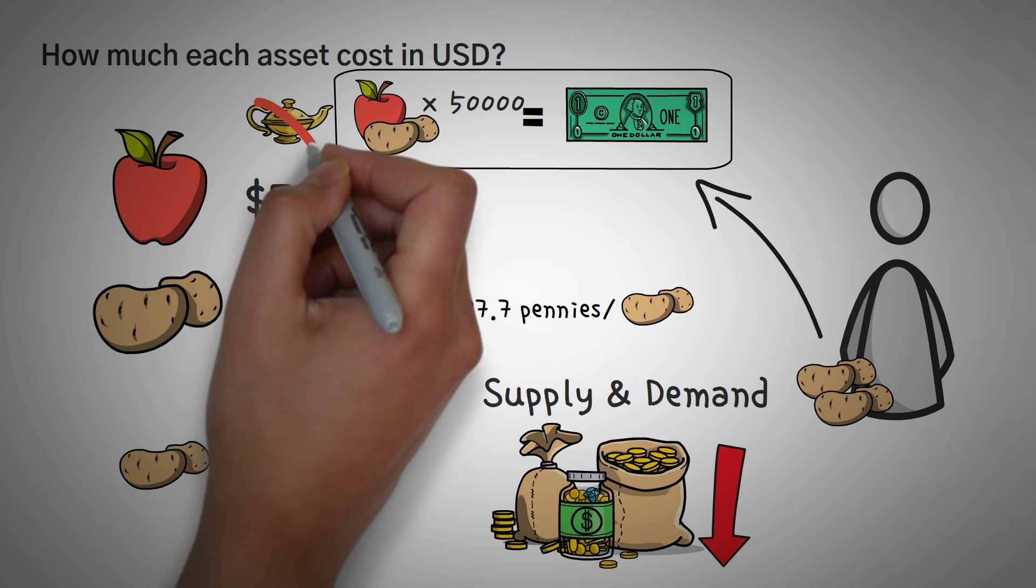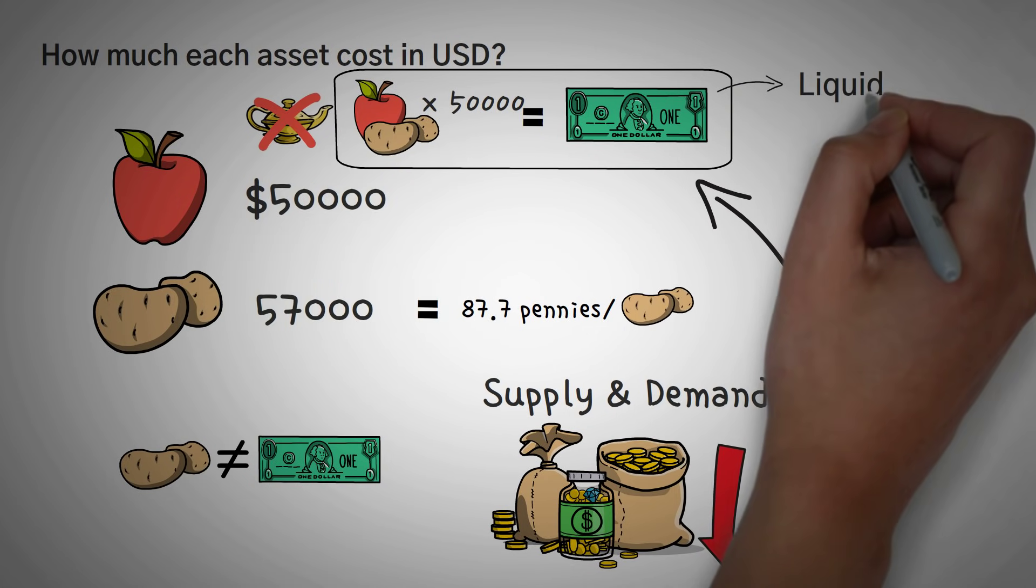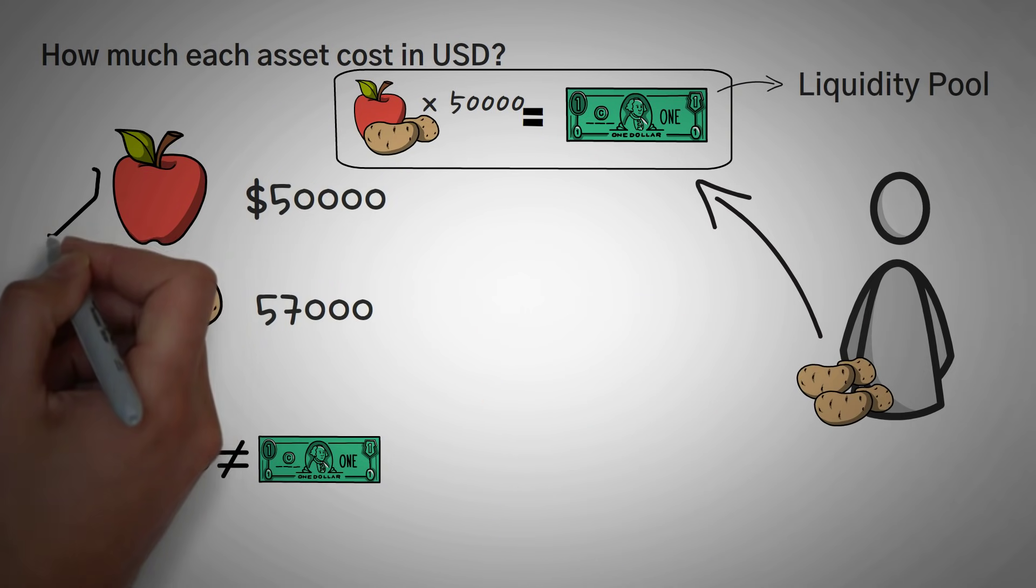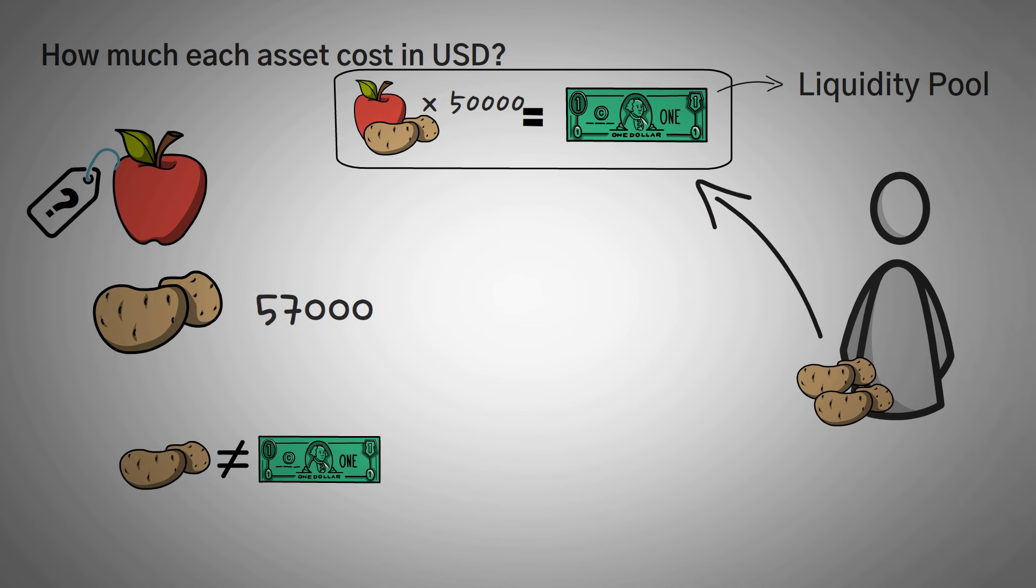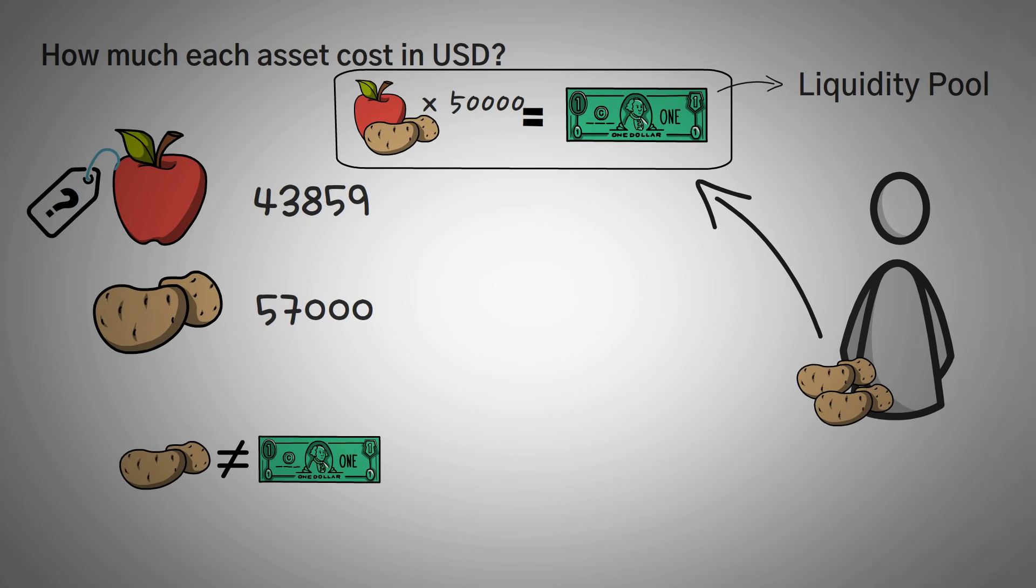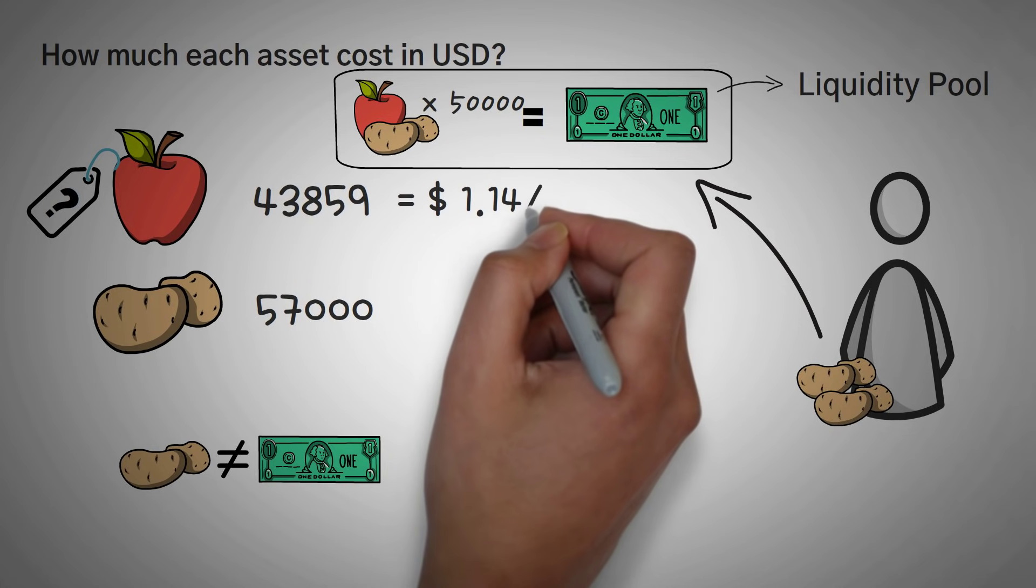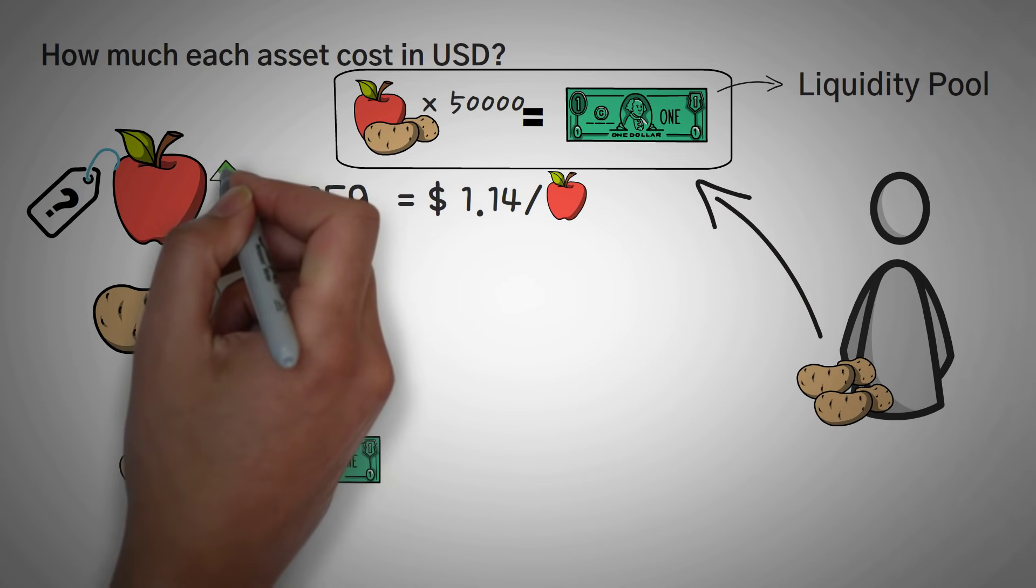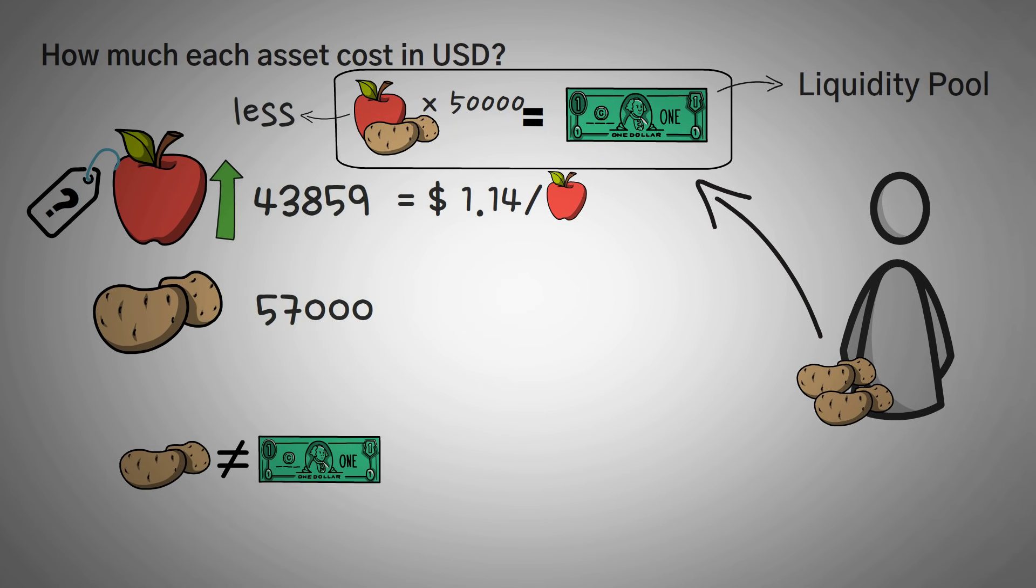So from now on, instead of saying genie's lamp, I'm going to call it what it really is, a liquidity pool. So now let's calculate the price of the apples. This calculation would be 50,000 dollars over 43,859. This means the apples are worth a dollar and 14 cents. They rose in price because there's less of them in the liquidity pool.